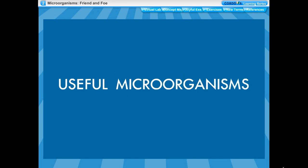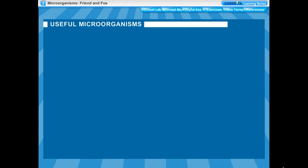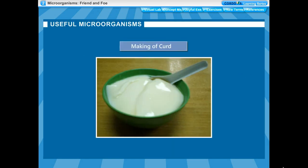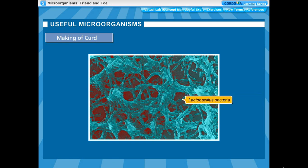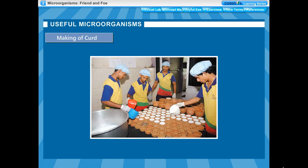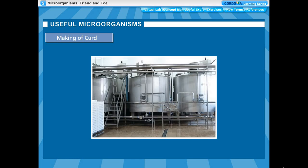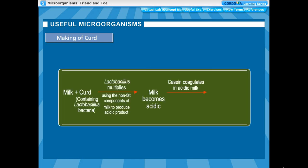Useful Microorganisms. Lactobacillus bacteria help to make curd from milk. Curd is formed when a protein called casein present in milk clumps together to form a solidified mass.